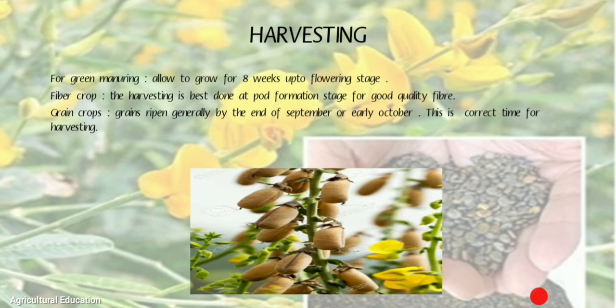Harvesting: For green manuring, allow the crop to grow for 8 weeks up to the flowering stage. For fiber crop, harvesting is best done at pod formation stage for good quality fiber. For grain crops, grain ripens generally by the end of September or early October, which is the correct time for harvesting.